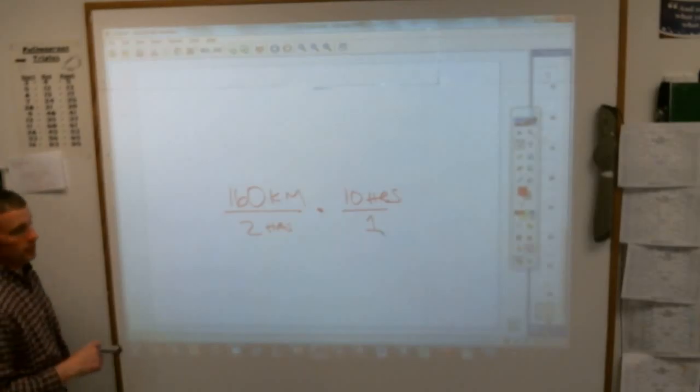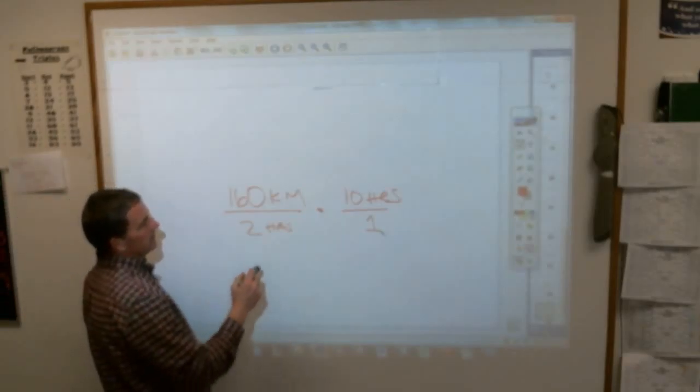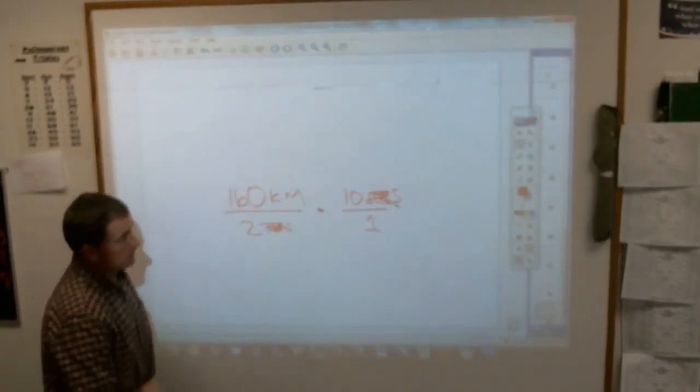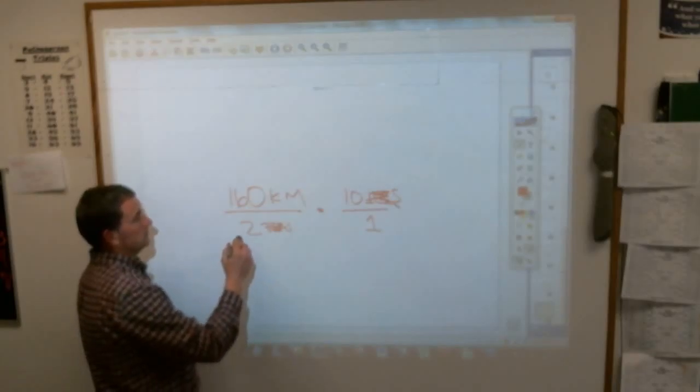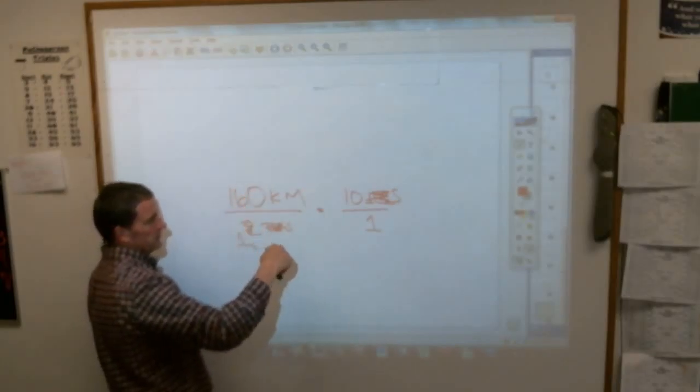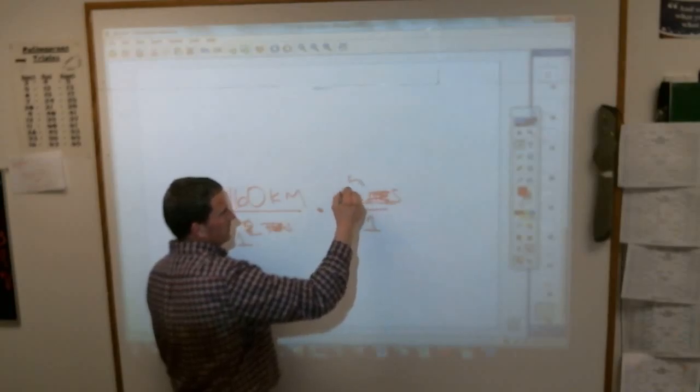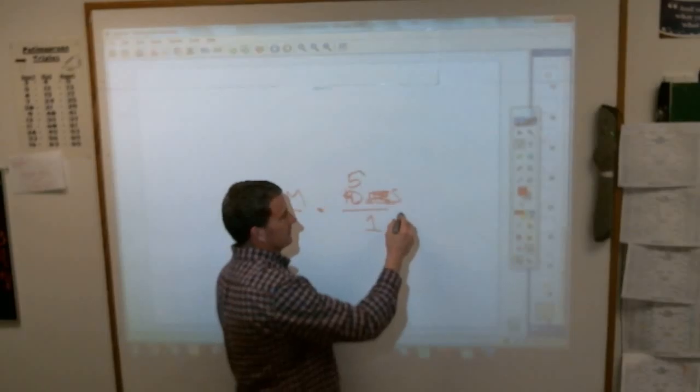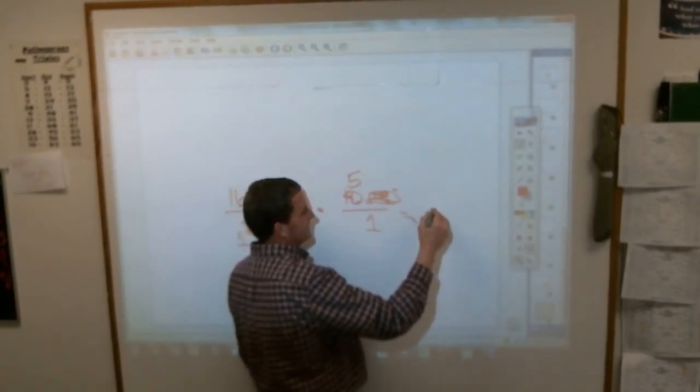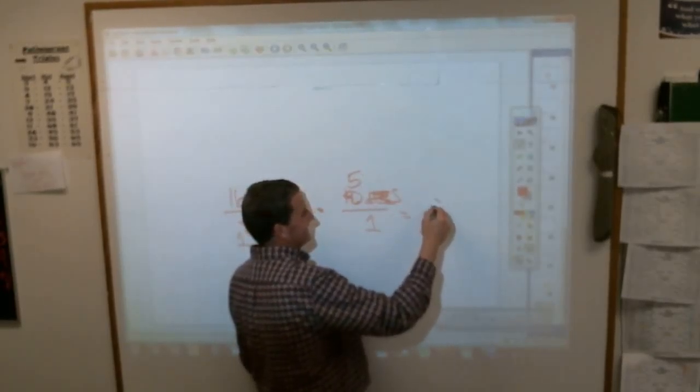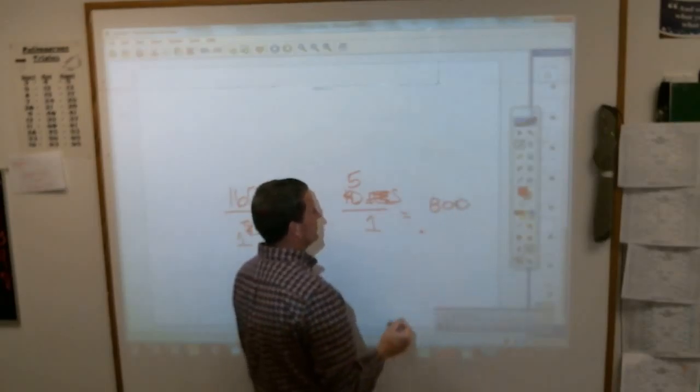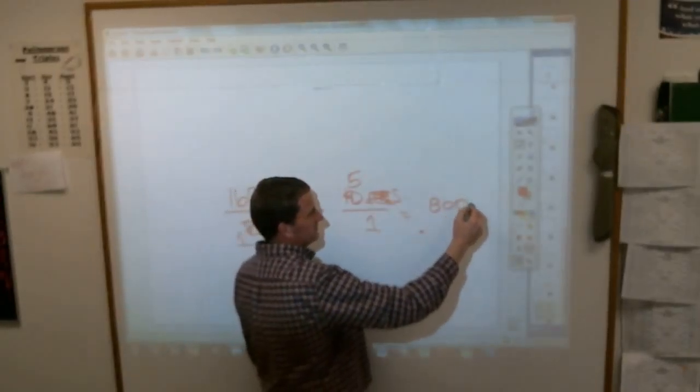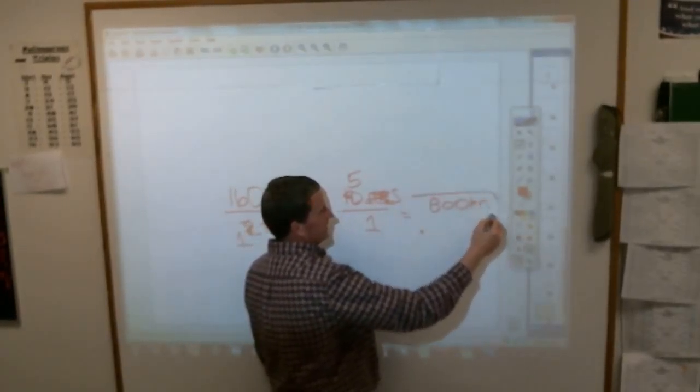What can you cross cancel there? A couple things. Isabel, you can cross off? Hours. And not only can you cross off hours, Emily, you can also make the 2 a 1 and the 10 a 5. Correct. Or you can do the 2 into 160. It doesn't matter, one of the two. And then 5 times 160 is, Keith? No, 400. I'm hoping 800. Yep. And your label that's left is kilometers. 800 kilometers.